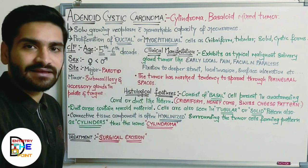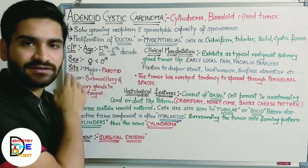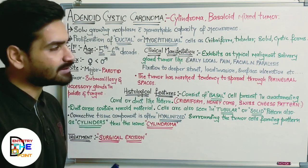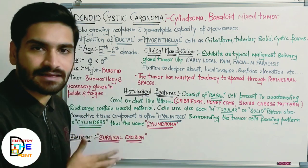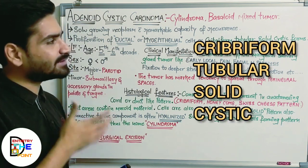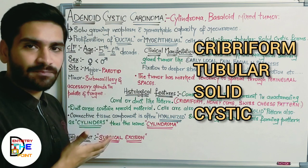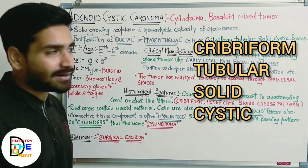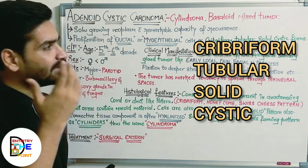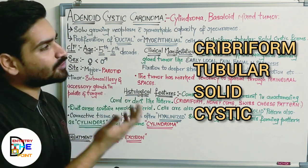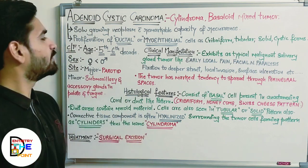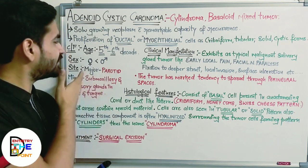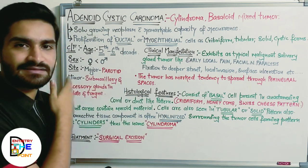There is proliferation of ductal or myoepithelial cells — the cells of the ducts of the salivary gland or the myoepithelial cells. There is proliferation of these cells in the form of various patterns if you see the histological section of this tumor: cribriform pattern, tubular pattern, and solid or cystic forms.